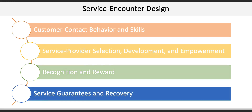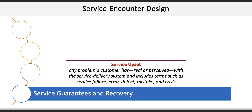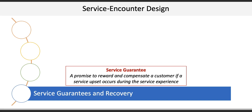The last element is service guarantees and recovery. Inevitably, customers will be unhappy as a result of service upset. A service upset is a problem a customer has — whether real or perceived — with the service delivery system, and includes terms such as service failure, error, defect, mistake, and crisis. How organizations react to service upset is crucial. One way is to provide a service guarantee, which is a promise to reward and compensate a customer if a service upset occurs during the service experience.